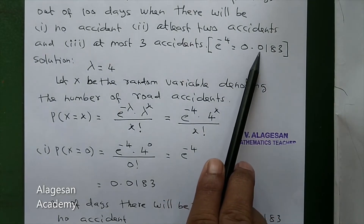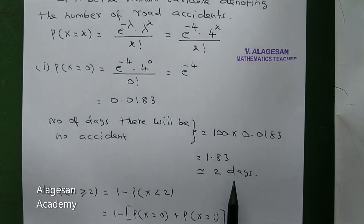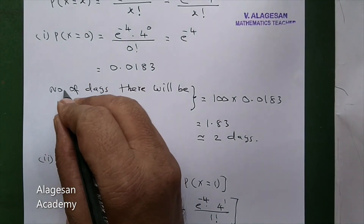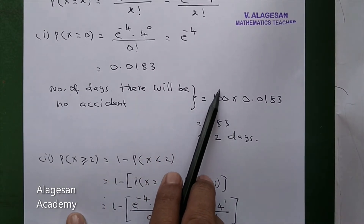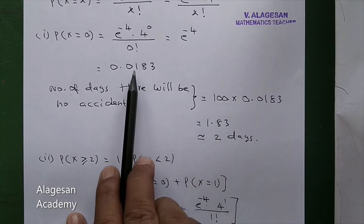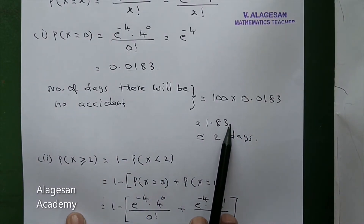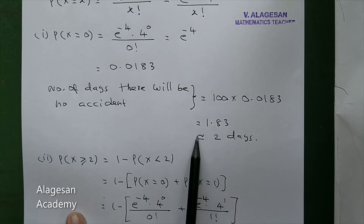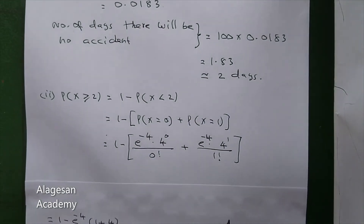4 to the power 0 is 1, 0 factorial is 1, so we get e to the power minus 4. The value of e to the power minus 4 is 0.0183. Number of days with no accident equals 100 into 0.0183, which gives 1.83, approximately 2 days.